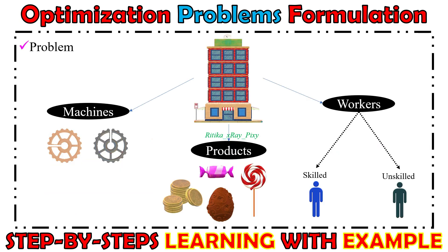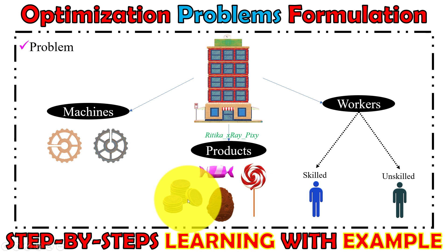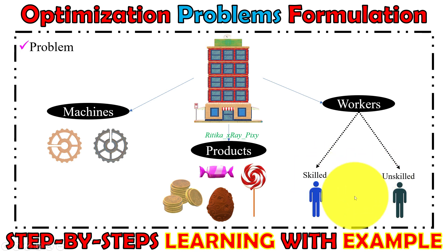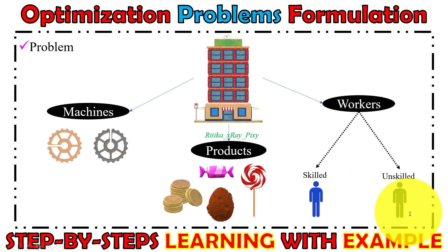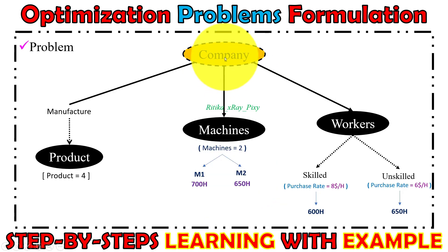Suppose a company manufactures products. For simplicity and easy understanding, we have four products: candies, chocolate eggs, and chocolate coins. We also need machines for manufacturing — here we have two types of machines. We also need workers who will help in product manufacturing. Here we have two types of workers: skilled and unskilled. Skilled workers can operate machines during the manufacturing process, and unskilled workers can help in product packing, delivery, and keeping products in the store.